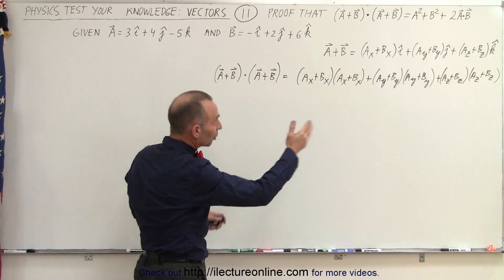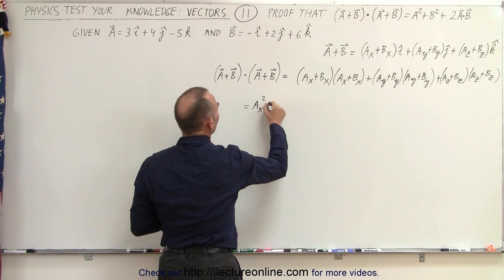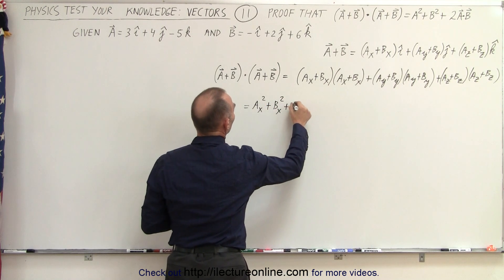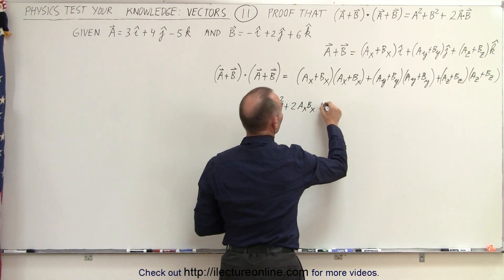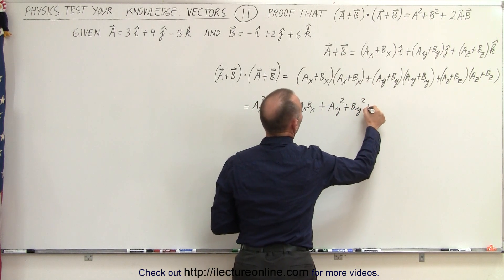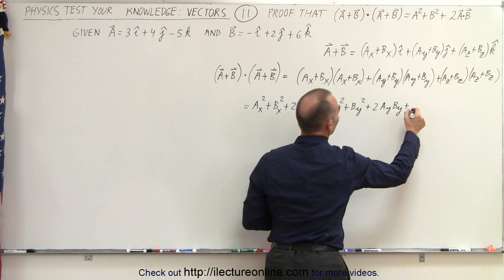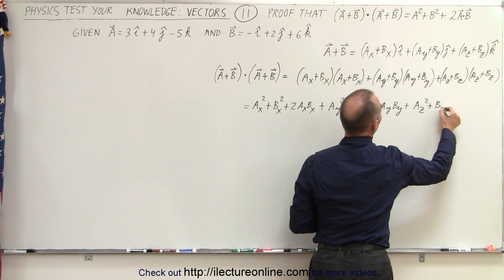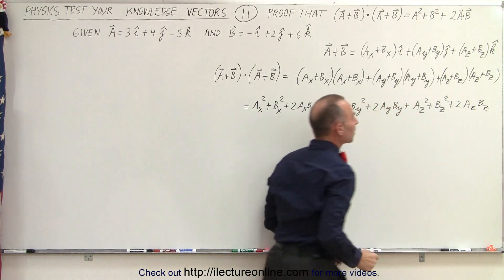So now let's go ahead and multiply all these out. This is equal to ax squared plus bx squared plus two times ax·bx, plus ay squared plus by squared plus two times ay·by, plus az squared plus bz squared plus two times az·bz.